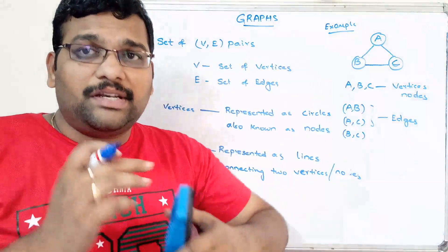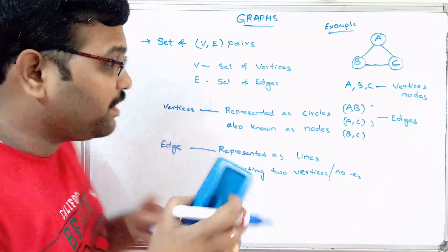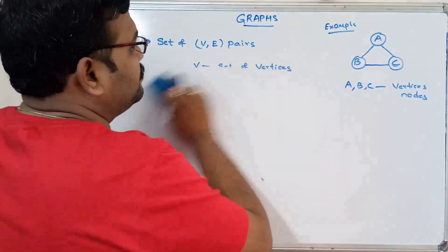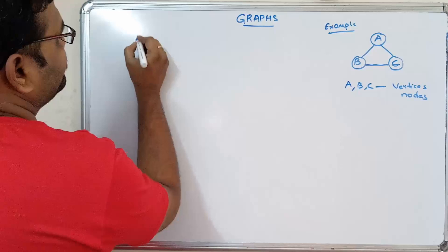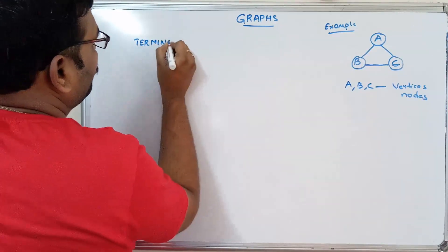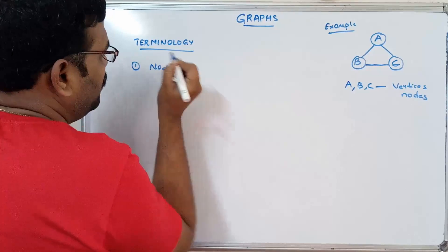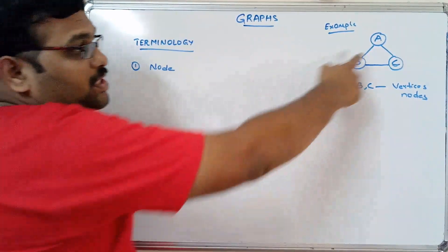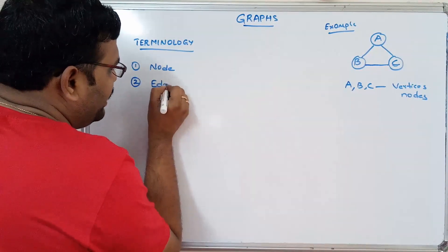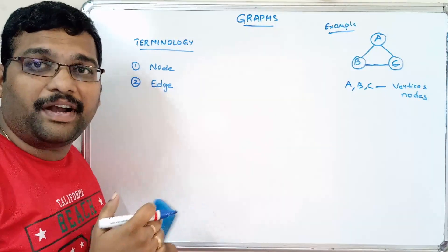Let us first see the terminology of a graph, and then we'll go with the types of graphs. The first term is node, which is a vertex represented as a circle. The second is edge, which is a line — a connection between two different nodes.